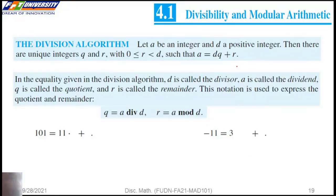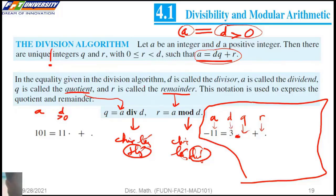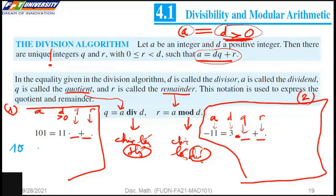But at last today, we want to talk about division algorithm. Let a be an integer and d a positive integer. We have the equality. This is the remainder and quotient. Let a be an integer, d a positive integer. We can find the unique integers q and r, such that, for example, can you show me q and r here? This is a, this is d. Keep in mind that d is positive. What is q, what is r?